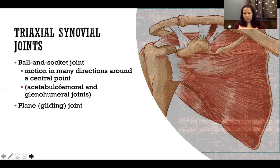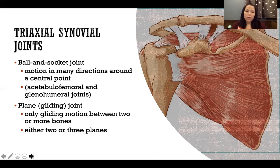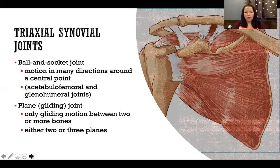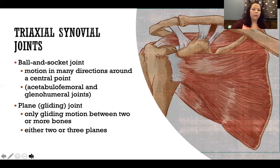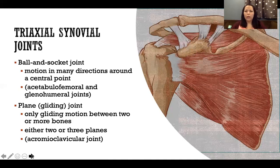Plane or gliding joints — both terms are used interchangeably — can actually be biaxial or triaxial, though more commonly triaxial. They only allow gliding motion, but in two or three planes. If triaxial, the joint can glide side to side, front to back, or in rotation. An example is the acromioclavicular joint — the articulation between the acromion process of the scapula and the acromial end of the clavicle, at the top of the shoulder.